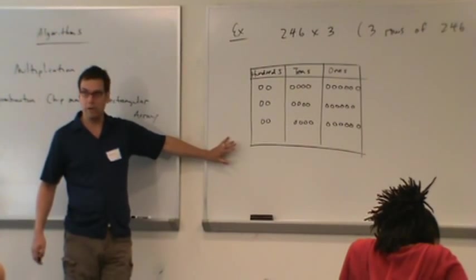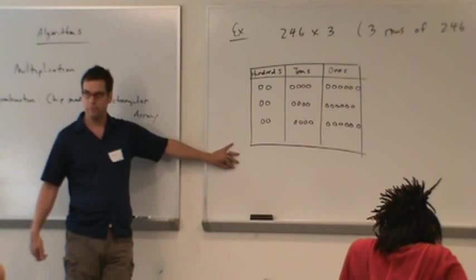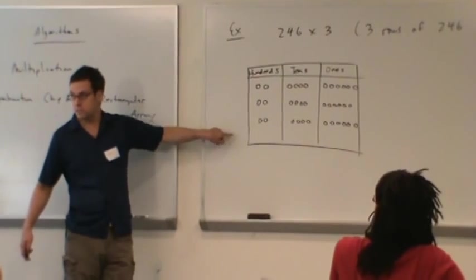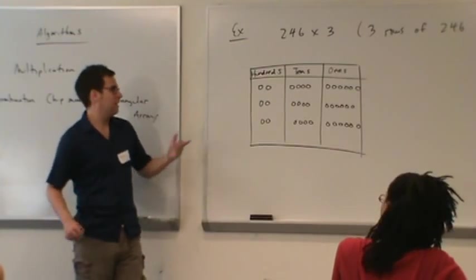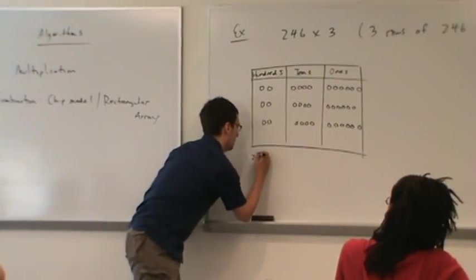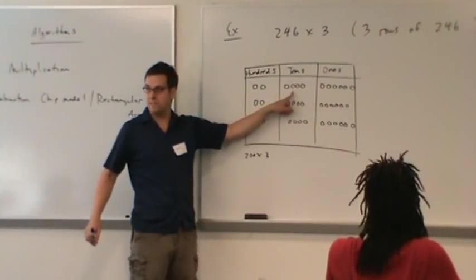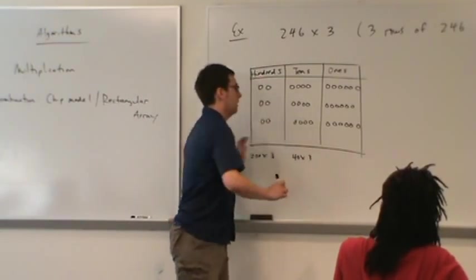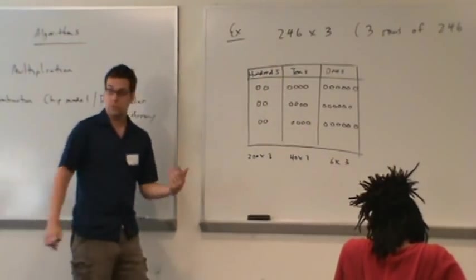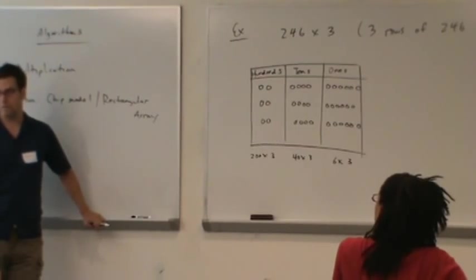This model is showing all sorts of stuff. What else can you see on this model tied in with multiplication? What's the definition of multiplication? Do you see that anywhere? 246 plus 246 plus 246. We actually see, this is 200 times 3. This is 40 times 3. This is 4 tens, so it's 40 times 3. And this is 6 times 3. So the distributive property, the key component of the algorithm, is illustrated on this model. There's a ton going on in this model, so it's very rich.